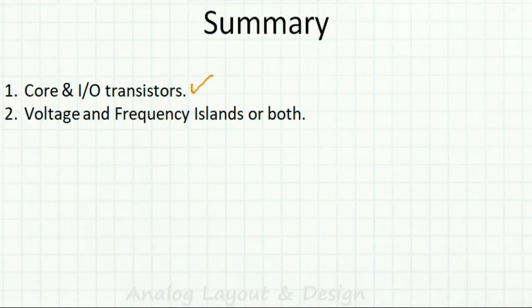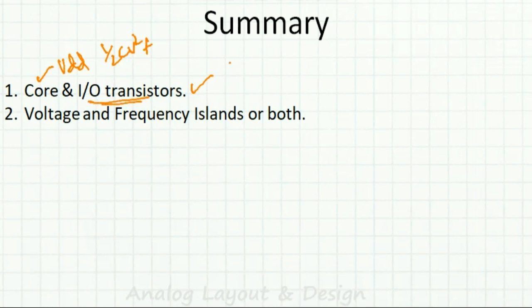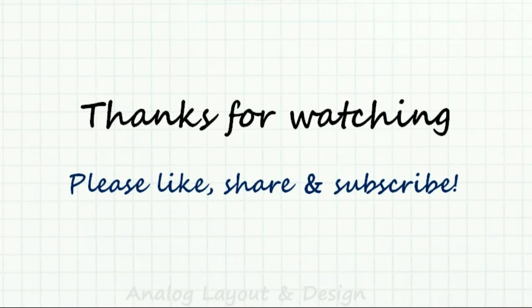To summarize: core transistors operate at low voltage to save power (½CV²F), while IO transistors operate at higher voltage for noise immunity when interfacing with the external world. We can save power further using voltage islands and frequency islands, or a combination of both. Thanks for watching — if you liked the video, please hit like, share, and subscribe.